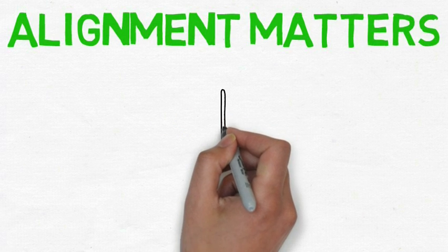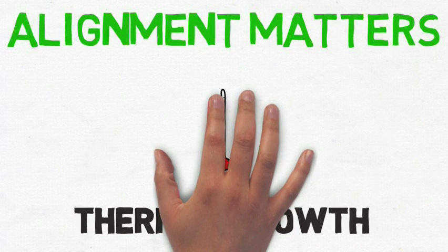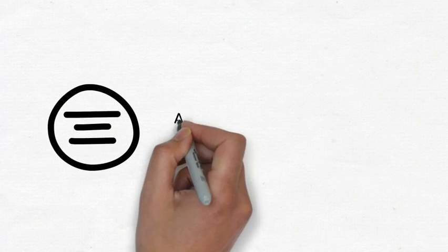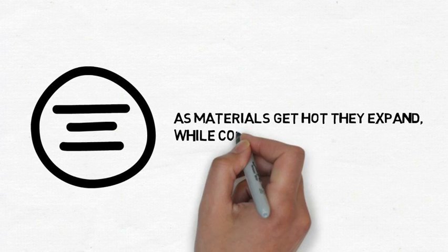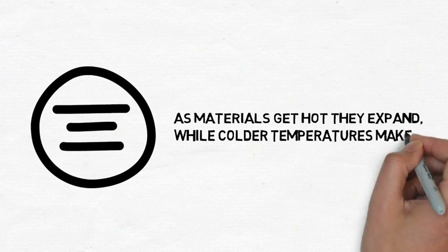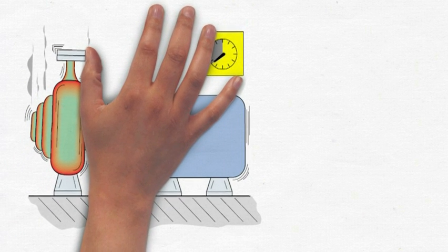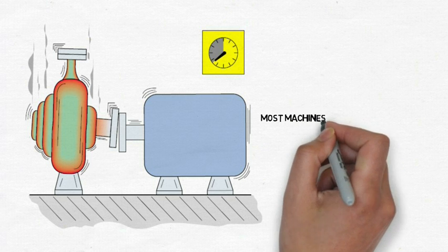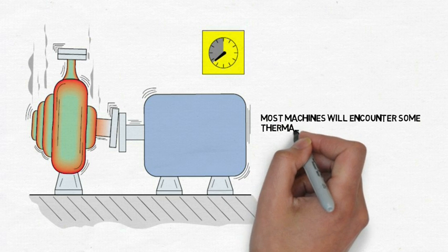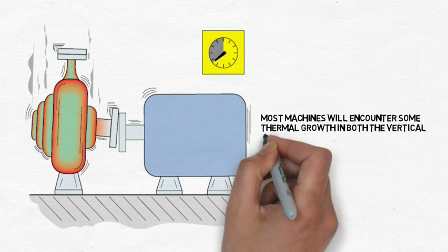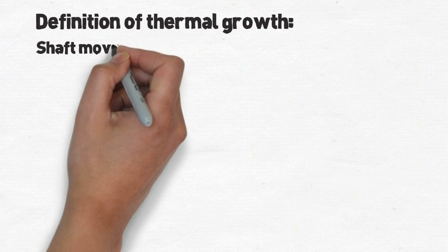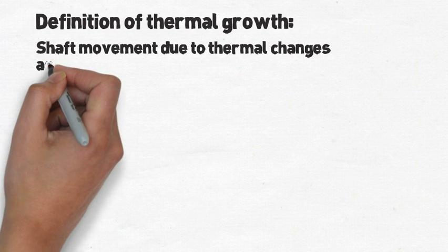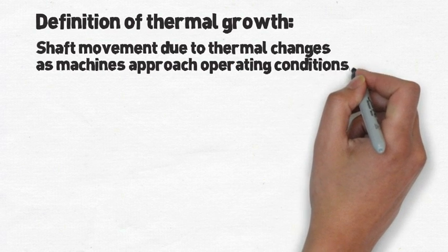Alignment Matters proudly presents thermal growth. By nature, materials expand as they heat up and contract as they cool down. For shaft alignment, we look at the expansion of machine housings in the vertical and horizontal directions. Temperature changes cause the shaft centerlines of machines to move after startup as they approach operating conditions.